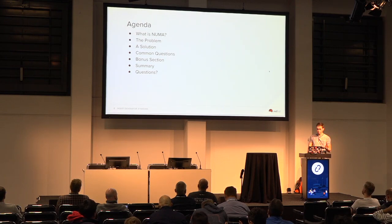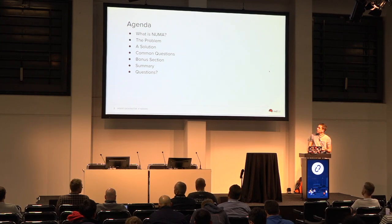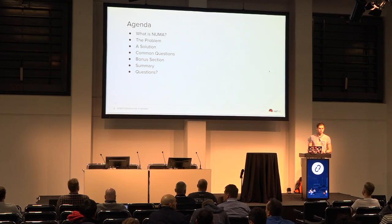I'm going to go through the actual NUMA-aware vSwitches problem itself and a couple of the approaches we tried before finally talking about the actual solution we settled on. After that, I'll go through some common questions people have asked me over the last couple of months, and then a bonus section covering some related features that I think people should care about, then wrap up with questions.